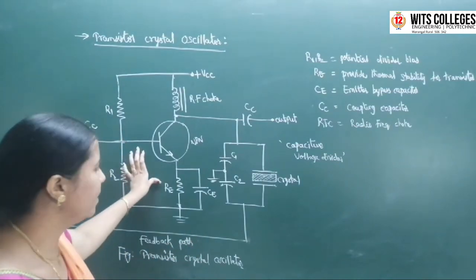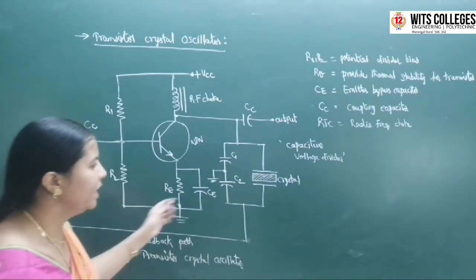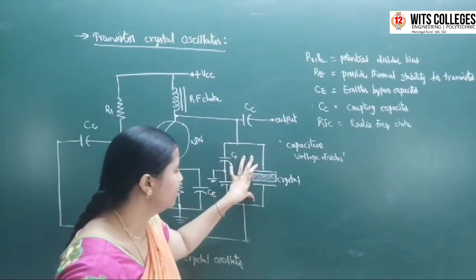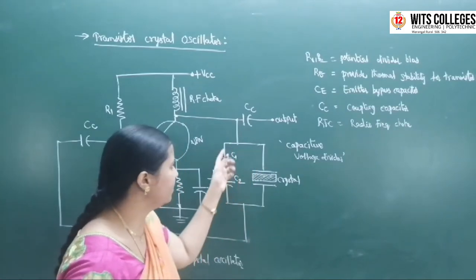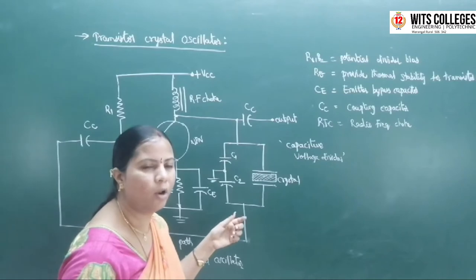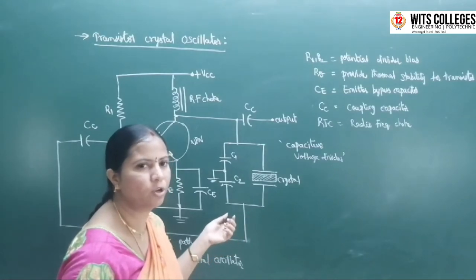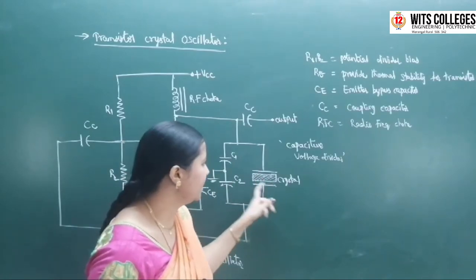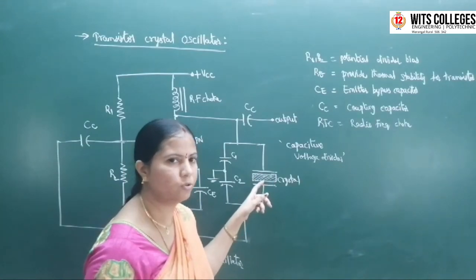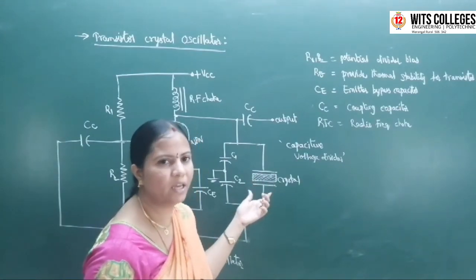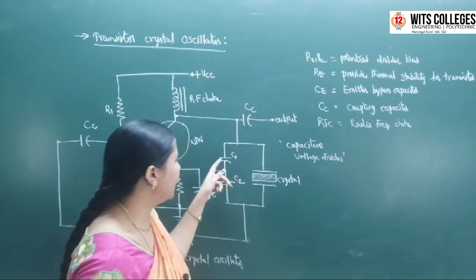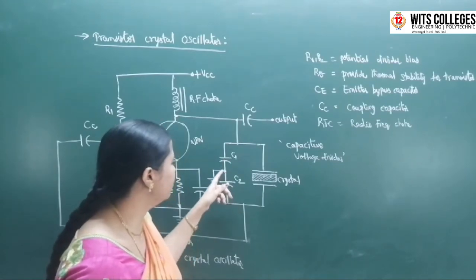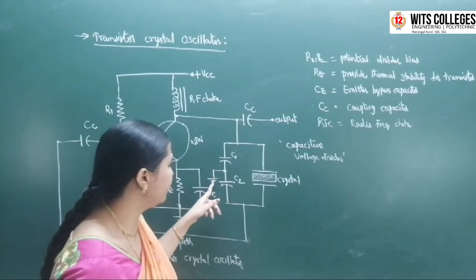This is the circuit diagram, and here is the feedback path. The feedback circuit is a tuned circuit, and it is similar to the Colpitts oscillator feedback circuit. In place of the inductor in Colpitts oscillator, we are connecting a crystal. The crystal is equivalent to the inductor, in parallel with capacitors C1 and C2. Capacitors C1 and C2 are connected in series with the center output to ground.